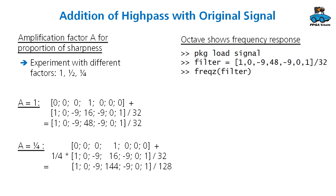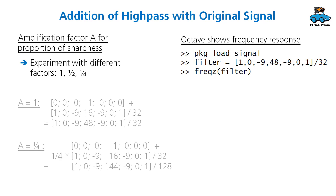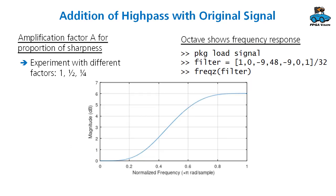With Octave, you can see the frequency response. For low frequencies, you have an amplification of zero dB. So there is no change in the frequency. And for higher frequencies, you get a magnitude of six dB, so a factor of two.